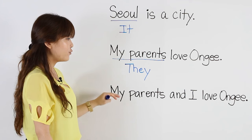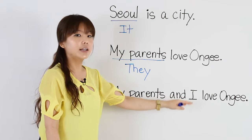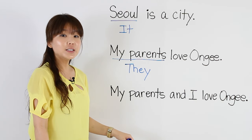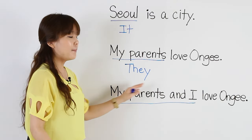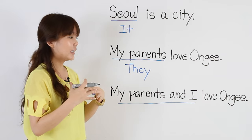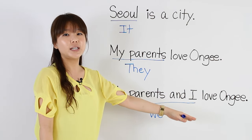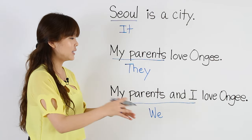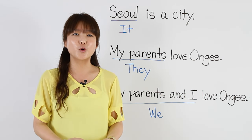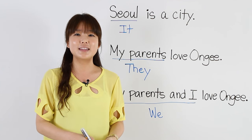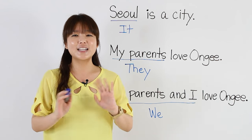The last example is very similar to the second one: My parents and I love Ongi. The difference is it says and I, so this is my parents with me. I have to say We. We love Ongi — all of us. So in this video, we learned about subjective pronouns. I hope you guys have a good understanding of when and how to use them. Thank you for watching and I'll see you guys next time. Bye.